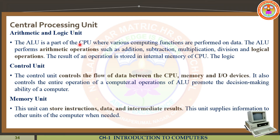Number three is the memory unit. This memory unit is very important to store all the data, instructions, or some intermediate results. If you want to store anything inside the computer, the memory unit is the responsible one. This unit supplies the information to the other units of the computer whenever needed. These three components — ALU, control unit, and memory unit — are all very important for the central processing unit.